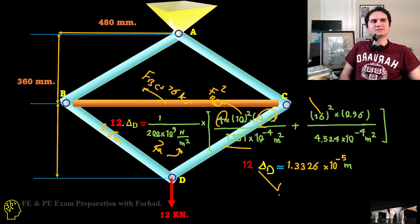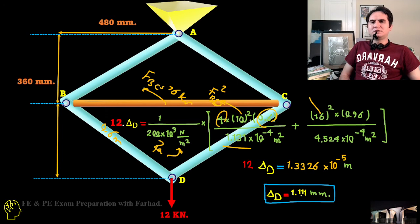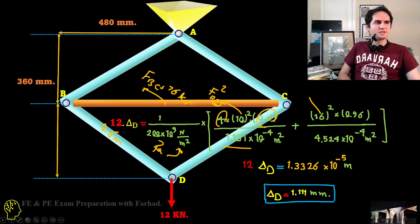If you do the math and replace it in formula, it just gives you delta D, 1.1 millimeter. That's how we can solve our problem in strain energy in terms of deflection. We'll solve more problems in this video. Thank you.